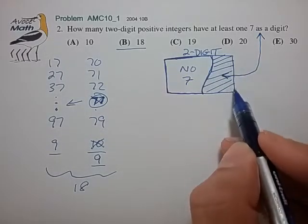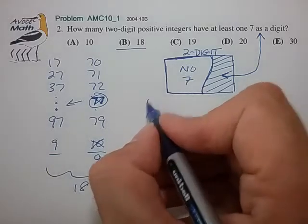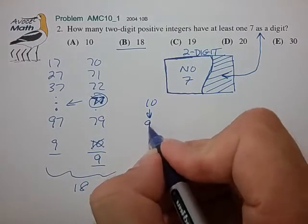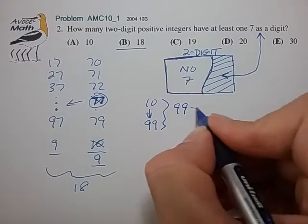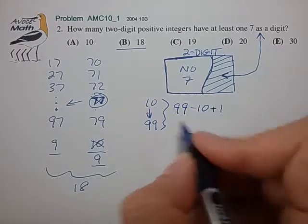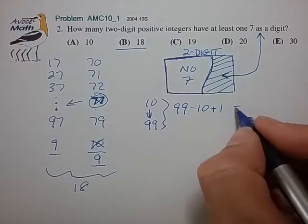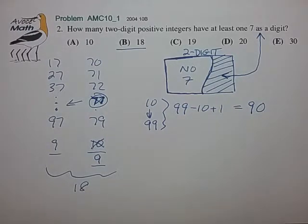So first let's count up the set of all two-digit numbers as being 10 to 99. And we know how to do that. It's simply 99 minus 10 plus 1, since we're counting the endpoints, for a total of 90 two-digit numbers.